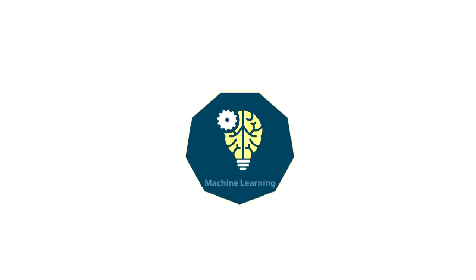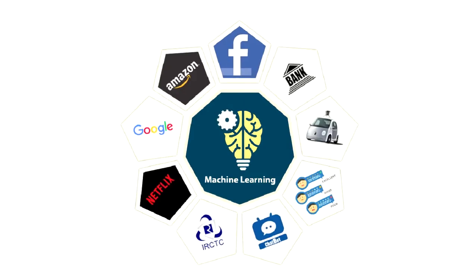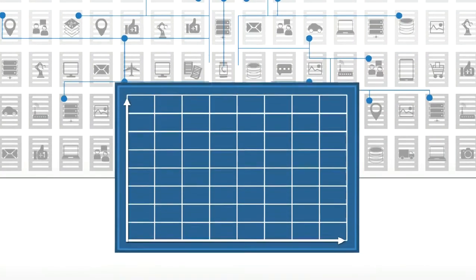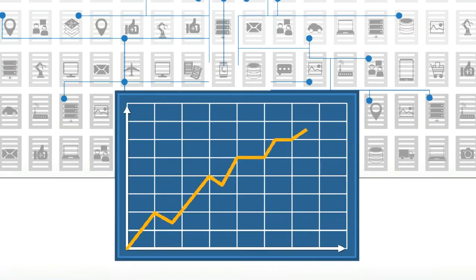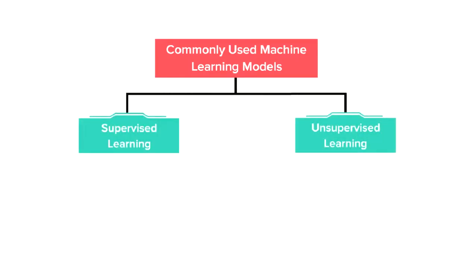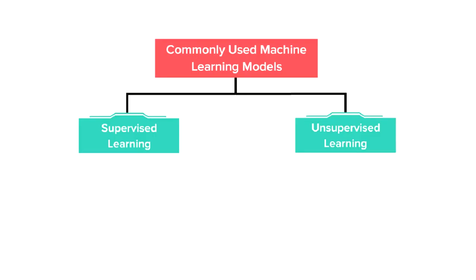In the previous topic, we learned about how machine learning works using the available data and how different applications are making use of this smart technology. We also got introduced to the term machine learning model, which is nothing but the program or algorithm that discovers patterns and insights in the data and learns from it. In this tutorial, we learn about different types of machine learning models available to us. Supervised learning and unsupervised learning are the two most commonly used types, and there are other types of models which we will briefly touch upon later in the training program.